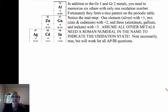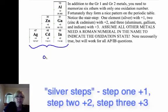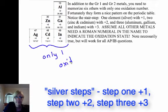Another quick memorization tool is this cluster of metals that have only one oxidation state. Group one is always plus one, group two is always plus two, and a handy way to memorize these is to see this pattern on the periodic table. Notice the stair step: one element is plus one, two elements are plus two, three elements are plus three.